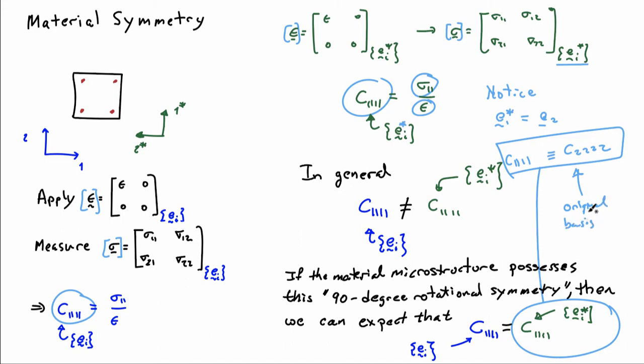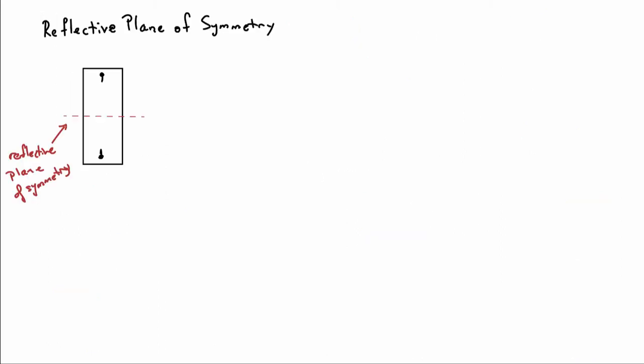So if I have a material that possesses this rotational invariance, I'll have an interrelationship between the elastic components. Rotation is one type of symmetry that we often see in materials. Another type of symmetry is reflective planes of symmetry. I've drawn a microstructure with two motifs in it, and you can see there's a reflective plane of symmetry right through the middle of this object.